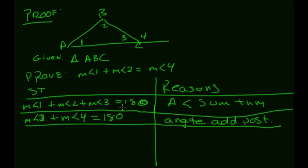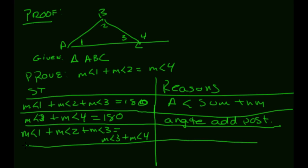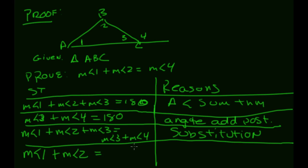Since both expressions equal 180, by substitution: the measure of angle one plus the measure of angle two plus the measure of angle three equals the measure of angle three plus the measure of angle four. Both sides have the measure of angle three, so subtracting it from both sides leaves: the measure of angle one plus the measure of angle two equals the measure of angle four. That's exactly what we needed to prove — the Remote Interior Angles Theorem is proven.